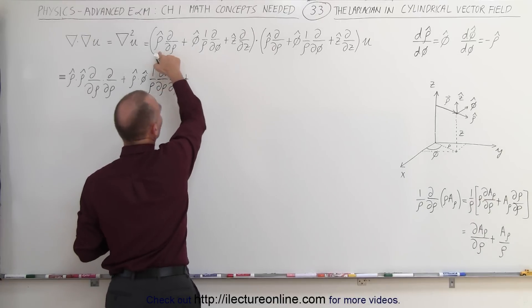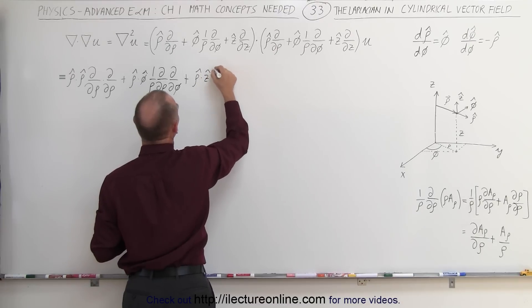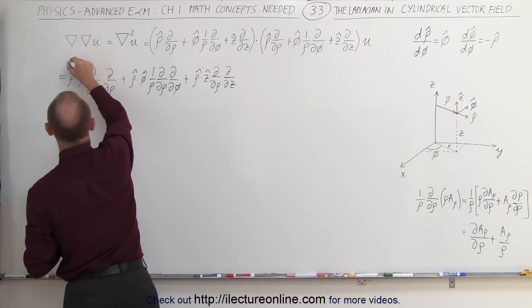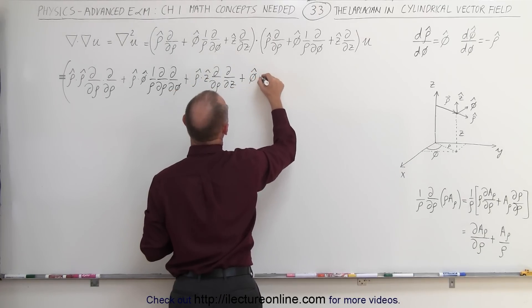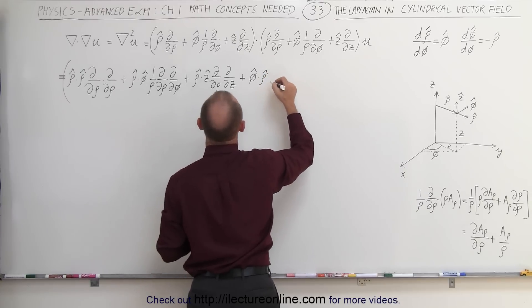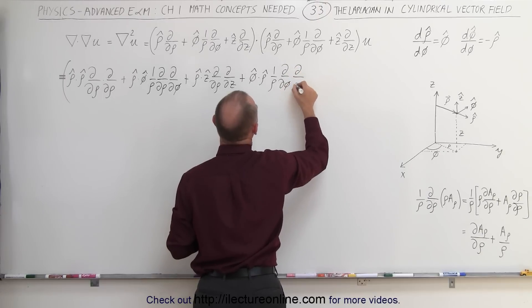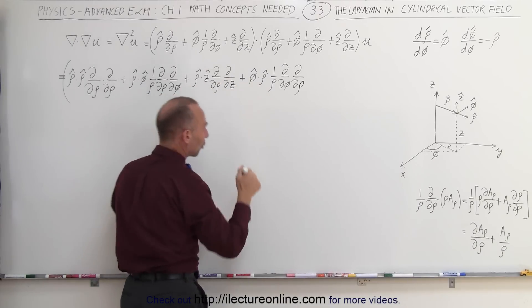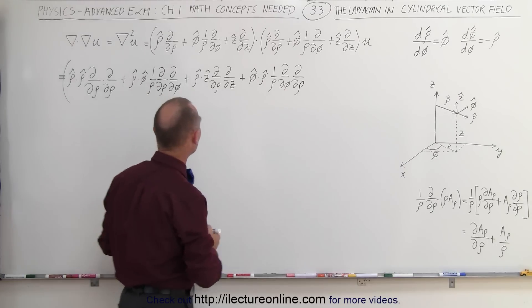Then plus the ρ unit vector dotted with the z unit vector, times the partial with respect to ρ, times the partial with respect to z. Continuing with the φ unit vector dotted with the ρ unit vector: times one over ρ, times the partial with respect to φ, times the partial with respect to ρ. All these terms with two orthogonal unit vectors dotted together will equal zero.